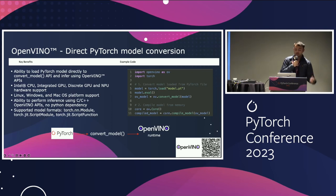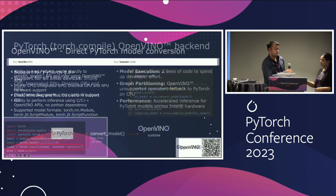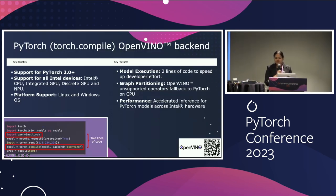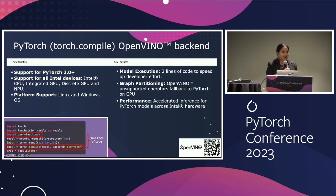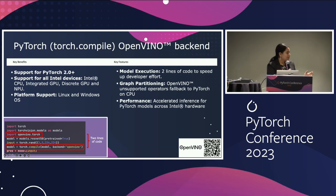Now I'll pass it over to my colleague Yamini, who will cover the torch.compile OpenVINO backend. The direct conversion method that Devang just described provides a great way to accelerate PyTorch models with OpenVINO APIs, but we went a step further to make it easy for developers to quickly integrate and test their PyTorch applications with OpenVINO using the torch.compile OpenVINO backend. This backend enables acceleration of PyTorch native applications on a variety of CPUs, both Intel integrated and discrete GPUs, with Intel NPU support coming soon, and it is supported on both Linux and Windows. All you need to do is install OpenVINO from PyPI using pip install openvino, and add two lines of code: importing openvino.torch, and specifying OpenVINO as the backend when calling torch.compile.